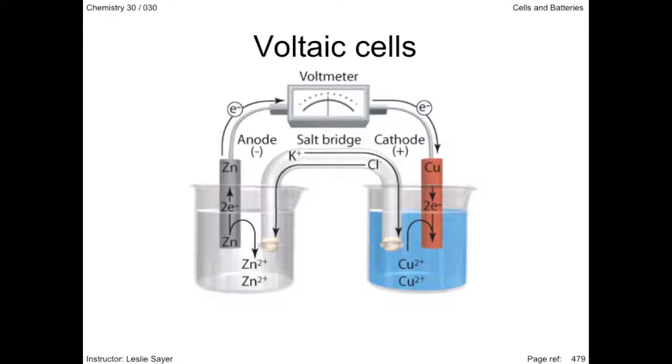This is the illustration of the Daniel cell again. The zinc electrode is connected to the copper electrode by way of a conducting wire. The voltmeter along this wire measures the energy in the electrons passing through it.